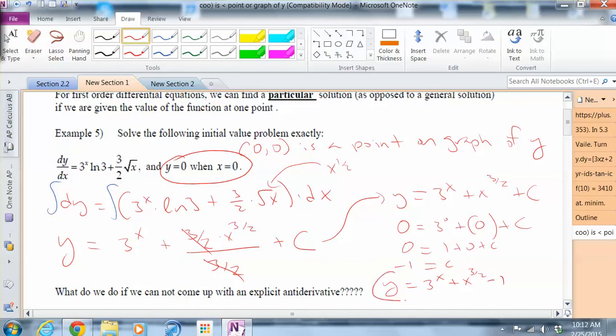And if you check it out, if you take the derivative of 3 to the x, you do get 3 to the x times the natural log of 3. If you take the derivative of x to the 3 halves, you will wind up getting that and of course you have the minus 1.